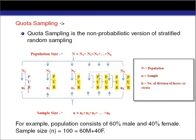In quota sampling, we collect our sample from each stratum by using the process of purposive sampling, also called judgment sampling — here I have written 'PUR' meaning purposive sampling. We are not using any random technique, whereas in stratified random sampling we used simple random sampling to draw the sample from each stratum.